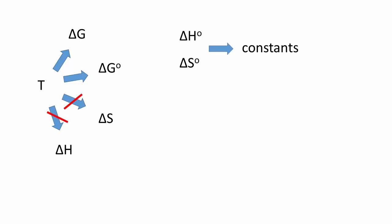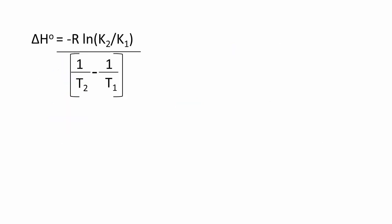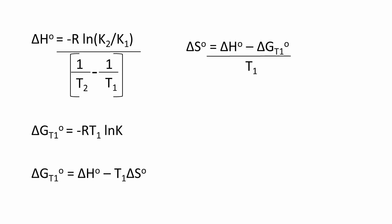By exploiting this very good approximation that standard delta H and standard delta S for any reaction are constants, we can derive the Van't Hoff equation. It's a very powerful equation. If we know the equilibrium constants at any two temperatures, we can calculate the reaction's value for standard delta H. Once we know this enthalpy change, we can use this value to solve standard delta G, standard delta S, and finally, our equilibrium constant K.